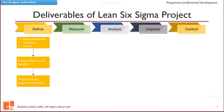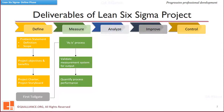In the Define Phase, a project charter is created. Making use of tools like VOC, CTQ matrix, SIPOC analysis, and process map, it is found out what is important to the customer, what are the visible gaps in the process, and what measures should be monitored so that the output meets the customer requirement. All the details like problem statement, goal statement, scope, resources, milestones, deliverables, objectives, metrics, and baseline go into a project charter.